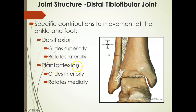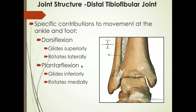If we want maximum plantar flexion, the following arthrokinematic motions must occur: that fibula has to slide or glide inferiorly and rotate medially. So we have these arthrokinematic motions occurring so that an osteokinematic motion can occur. These all must occur at the distal tibial-fibular joint for dorsiflexion and plantarflexion to happen. What we're referring to is what's happening to the fibula in relationship to the tibia — gliding superiorly and rotating laterally for dorsiflexion, and gliding inferiorly and rotating medially for maximum plantar flexion.